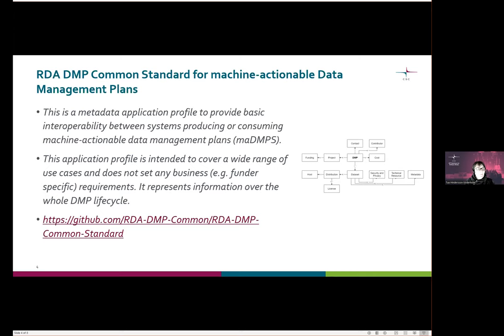In 2019, RDA provided a common standard for machine-actionable DMPs that ties the different elements in the DMP together using persistent identifiers. Not only initial information about the data itself, but also contributors, funders, and accumulating information about the datasets and their different distributions are to be added to the DMP as the research project proceeds.